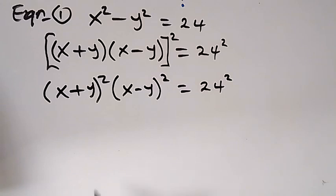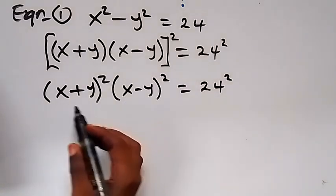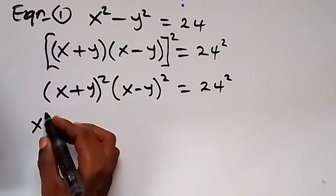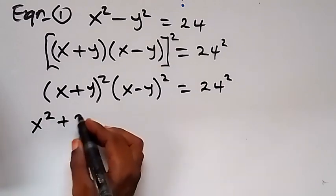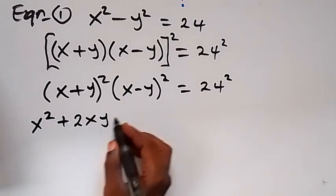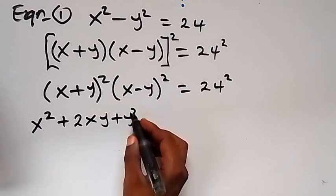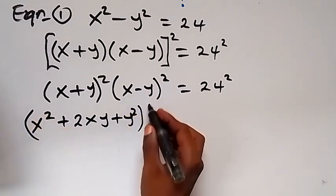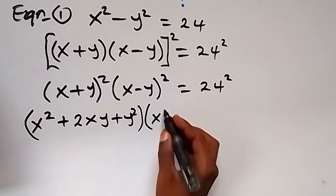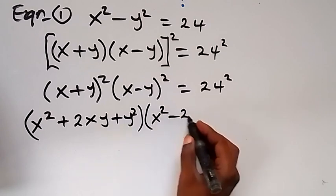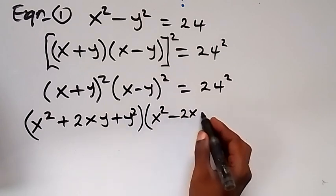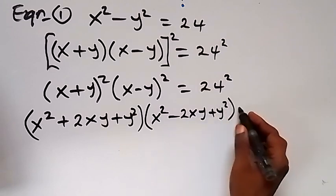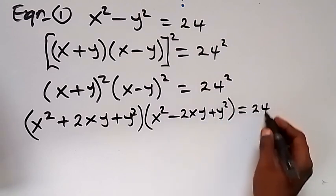And also, let's expand these. The expansion of x plus y squared gives us x squared plus 2xy plus y squared. And the expansion of x minus y squared gives us x squared minus 2xy plus y squared, which equals to 24 squared.